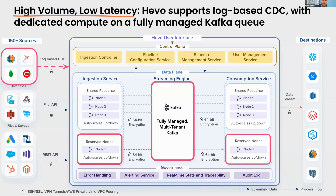If your use case requires large production database data to be streamed in real time to your destination, Hevo is a great choice. Other options that come into play tend to be far more cumbersome, with very extensive setup and deployable agents that increase both initial configuration time and ongoing management. Hevo, being a SaaS platform, has nothing to install, very straightforward pre-configuration, and in most cases you can create your pipeline and have data running in just a few minutes.